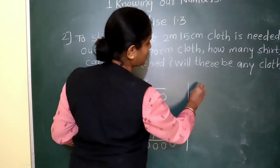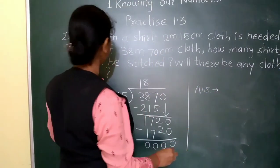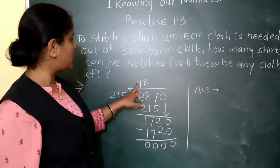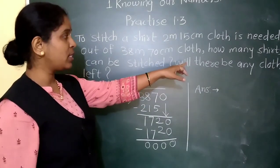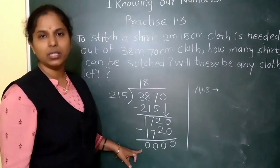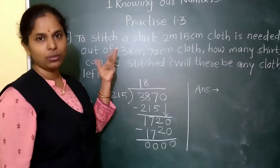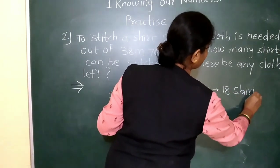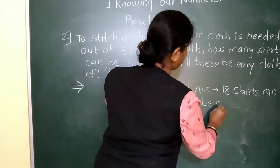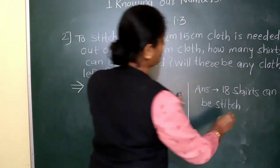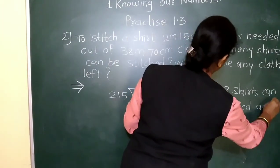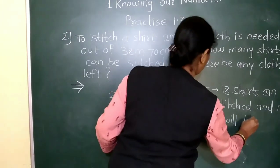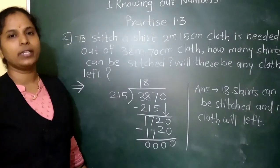Therefore, the final answer: 18 such shirts can be stitched with this cloth. And will there be any cloth left? The remainder is 0, so no cloth will be left.